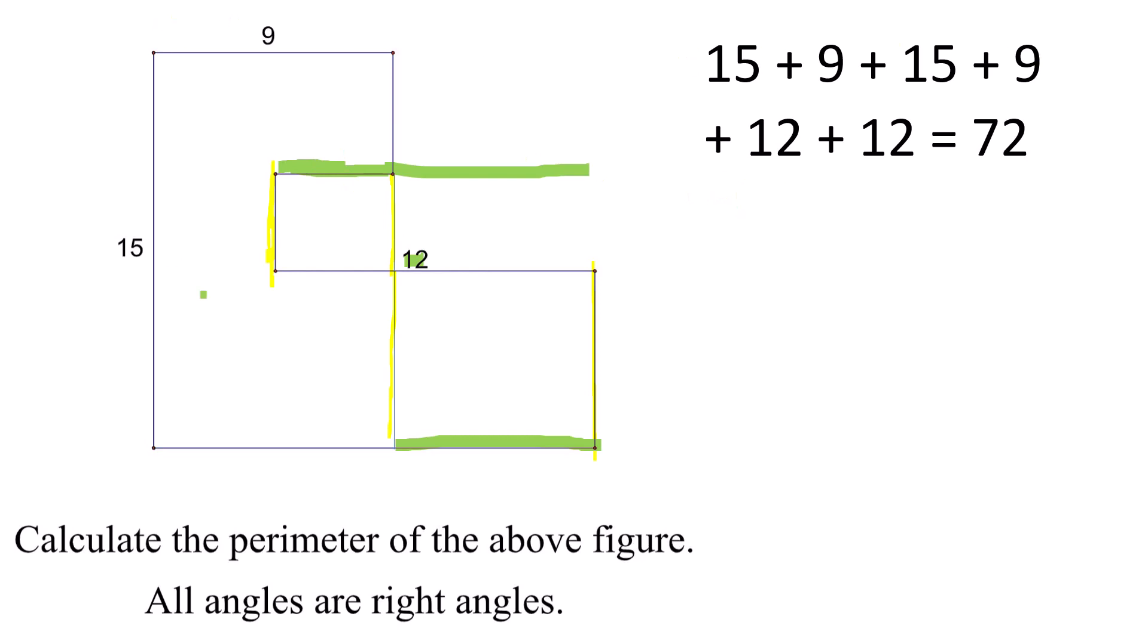Adding our rectangle, the 15 by 9, and adding two lots of 12, we end up with a perimeter of 72.